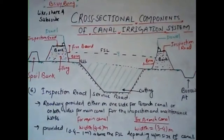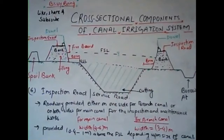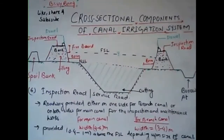The inspection road is provided 0.4 to 1 meter above the full supply level, depending upon the size of the canal. In some literature this range is stated as 0.4 to 0.8 meters, but generally it is provided 0.4 to 1 meter above the full supply level.